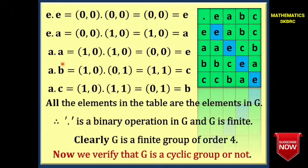A·B: (1,0)·(0,1) = (1+0, 0+1) = (1,1) = C. So A·B = C.